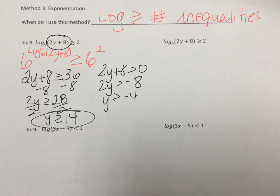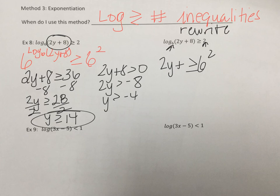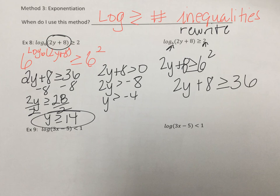Let's look at the same problem using the rewriting method instead. We need to keep our variable on the same side of the inequality so we don't have to flip the sign. The base is 6 and the exponent is 2, so 2y + 8 ≥ 6² — we get 2y + 8 ≥ 36, the exact same equation. So both methods work; just make sure y or x stays on the same side of the inequality.